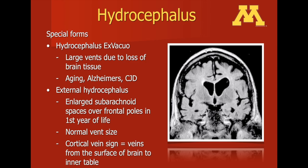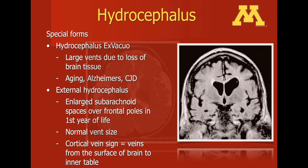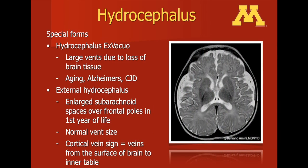Hydrocephalus ex vacuo can be seen in aging, Alzheimer's disease, or Creutzfeldt-Jakob disease. External hydrocephalus is when there is an abnormal accumulation of cerebrospinal fluid in the subarachnoid space around the brain, but not within the ventricular system.